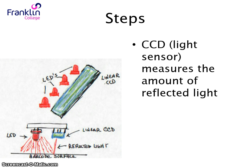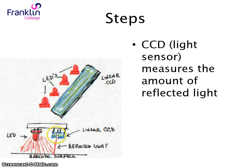Inside the reader, there is something called the CCD, the Charged Coupled Device. This is basically a light sensor, and this measures the amount of reflected light. We can see on the diagram there's the barcode surface, there's the LED light that shines red light at the barcode, and the reflected light comes back into the CCD. So the CCD measures that light.